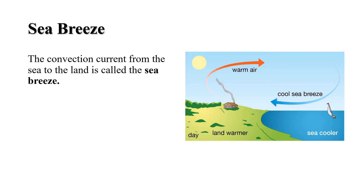The people living in coastal areas experience an interesting phenomenon. During the day, the land gets heated faster than the water. The air over the land becomes hotter and rises up. The cooler air from the sea rushes in towards the land to take its place. The warm air from land moves towards the sea to complete the cycle. This air from the sea is called the sea breeze.